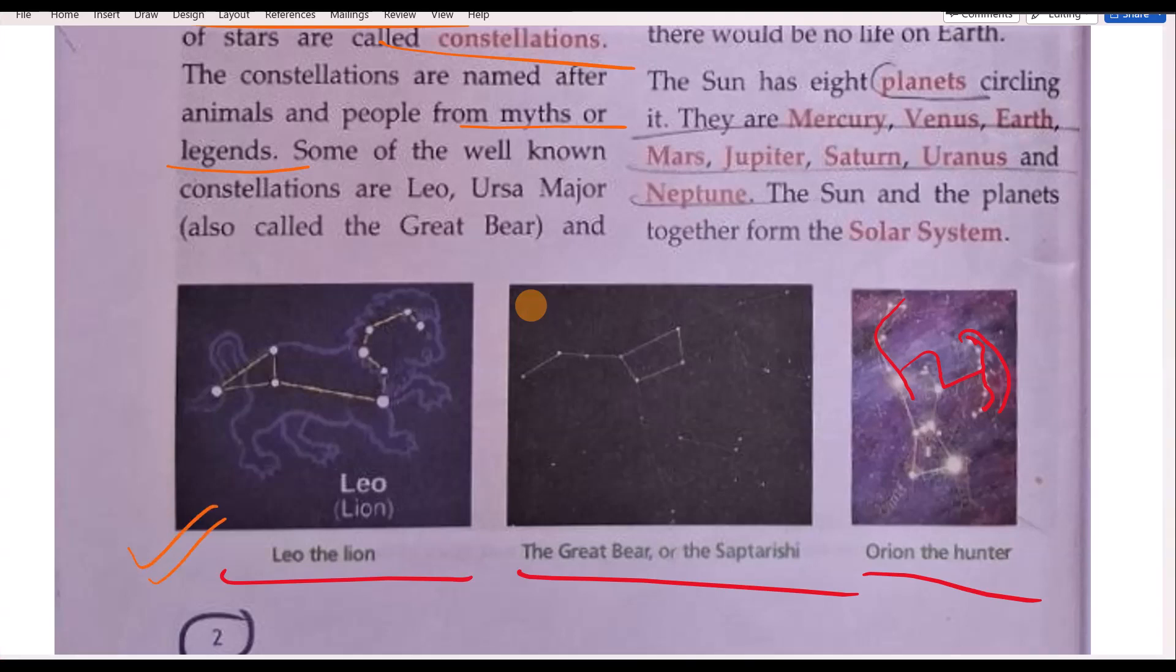Leo - Leo is nothing but the lion, because this star creates the pattern of the animal lion. Then Great Bear. Great Bear in Sanskrit name is also called Saptarishi.